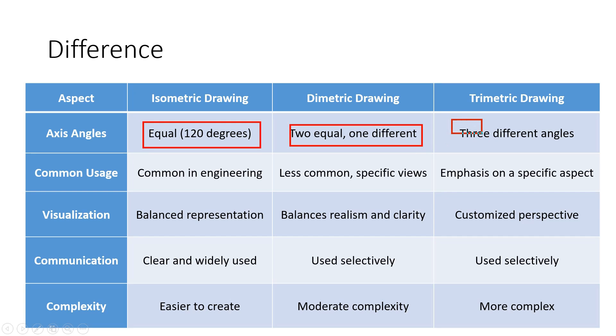In isometric drawing, all three axes are equally inclined at 120 degrees, creating a balanced and widely used representation, particularly prevalent in engineering designs.